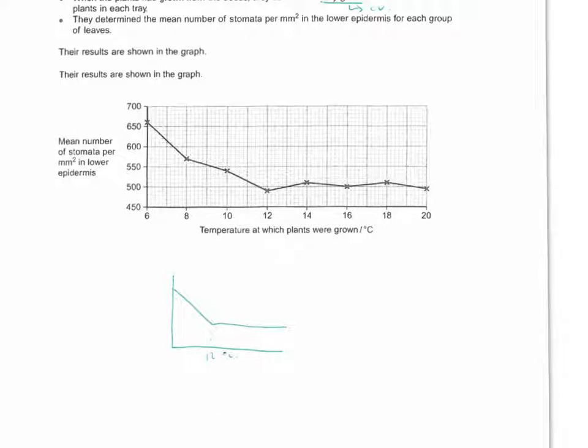So looking at question one, describe what the data shows. So we can see that as temperature increases, the mean number of stomata decreases, and then it sort of levels off. So if you're going to do a rough trend of what's going on, it decreases, and at 12 degrees, after 12 degrees, the mean number of stomata per millimeter squared levels off.